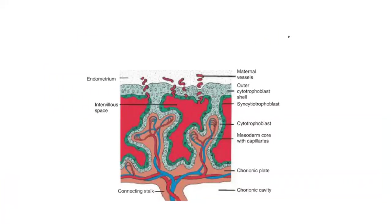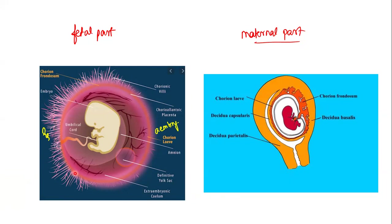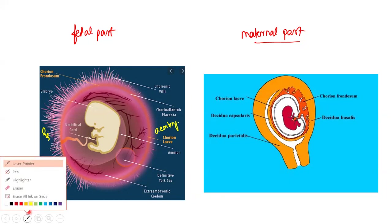The chorionic plate has villi all around it — this is why it is called chorionic villi. This will be the embryonic pole and this will be the abembryonic pole. Along the embryonic pole, there are lots of densely arranged villi, whereas along the abembryonic pole, hardly any villi are seen.